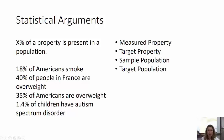In a statistical argument, it'll say that X percent of a property is present in a population. So it'll usually be expressed this way: X percent, whatever percent of a certain property, present in the stated population.